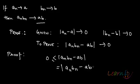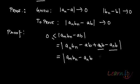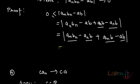What we can do is add and subtract a_n·b. Once we do that, we can combine the a_n terms: take a_n·b_n minus a_n·b so we can take out a_n as a common factor, and from the remaining terms a_n·b minus a·b, we can take out b as a common factor. So this leads us to a_n·(b_n - b) + b·(a_n - a).